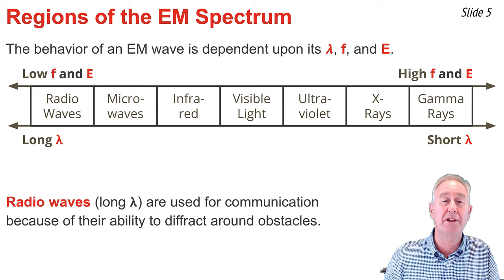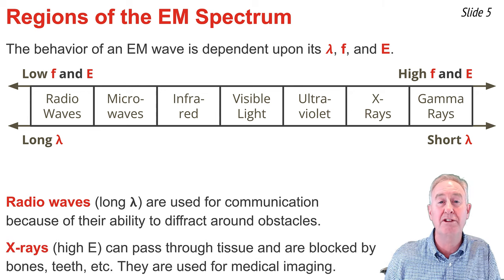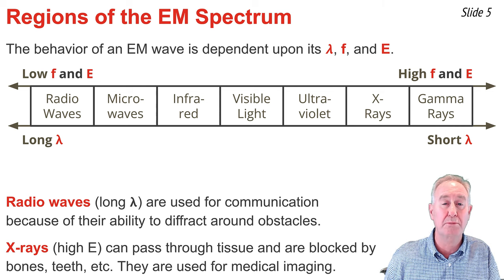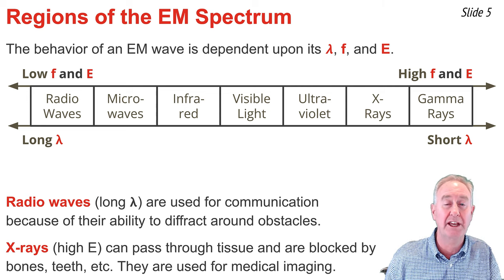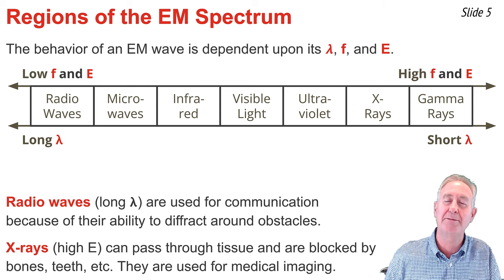As a second example, let's consider x-rays. Their high frequency and high energy give them the ability to pass through objects. For instance, x-rays can pass through much of the tissue of our body but are blocked by our teeth and our bones. For this reason, x-rays are commonly used in medical imaging.